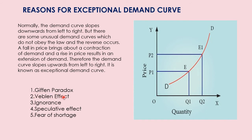The reasons for the exceptional demand curve have five headings: the first is Giffen's paradox, the second is the Veblen effect, the third is ignorance, the fourth is the speculative effect, and the fifth is the fear of shortage. These are the exceptions to the law of demand.